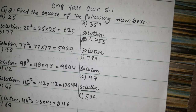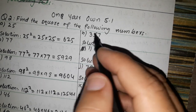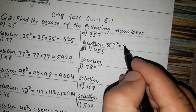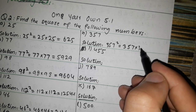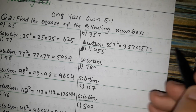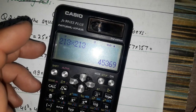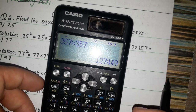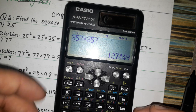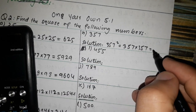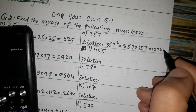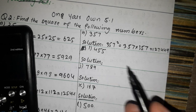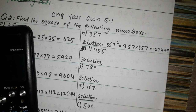Now 357 square. 357 multiplied by 357. 357 cross 357 — the answer is 127449. So 357 squared equals 127449.